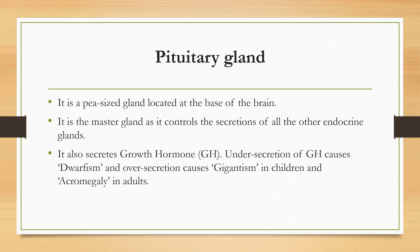The pituitary gland is present just below the brain, at the base of the brain. It is a pea-sized gland and is called the master gland as it controls the secretion of all the other endocrine glands. It also secretes growth hormone, which helps in the growth and development of bones and muscles. A person who has a deficiency of growth hormone in childhood remains very short and becomes a dwarf. On the other hand, a person having too much growth hormone becomes very tall or a giant.